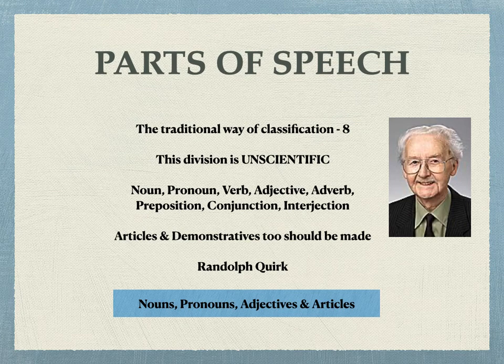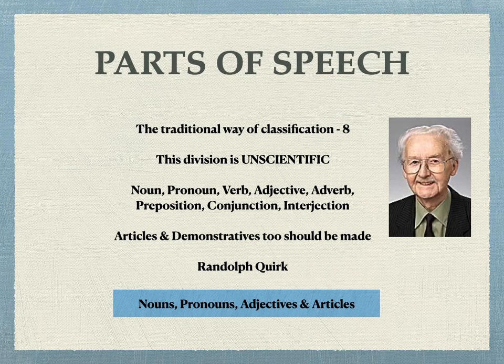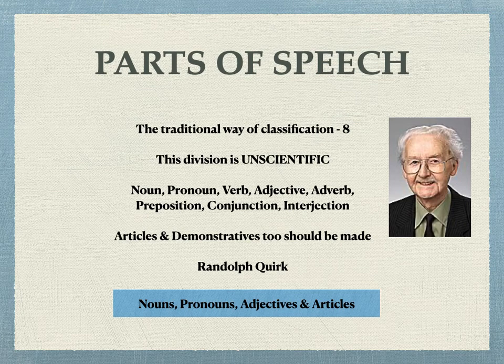According to parts of speech, the different parts are noun, pronoun, verb, adjective, adverb, preposition, conjunction, and interjection. C.C. Fries suggested that this is not the exact way in which you have to classify the different elements coming in speech. Randolph Quirk, another British linguist — you can see his picture on the right-hand side — suggested that articles and demonstrators too should be included in parts of speech. But unfortunately, that is missing. And therefore, this is a traditional way of classification as many modern linguists suggest.